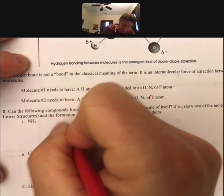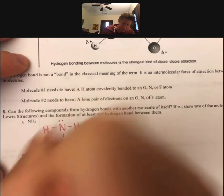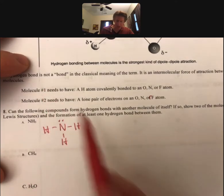And so let's draw the Lewis structure for ammonia, NH3. It's right there. This molecule has both of the things that are required.